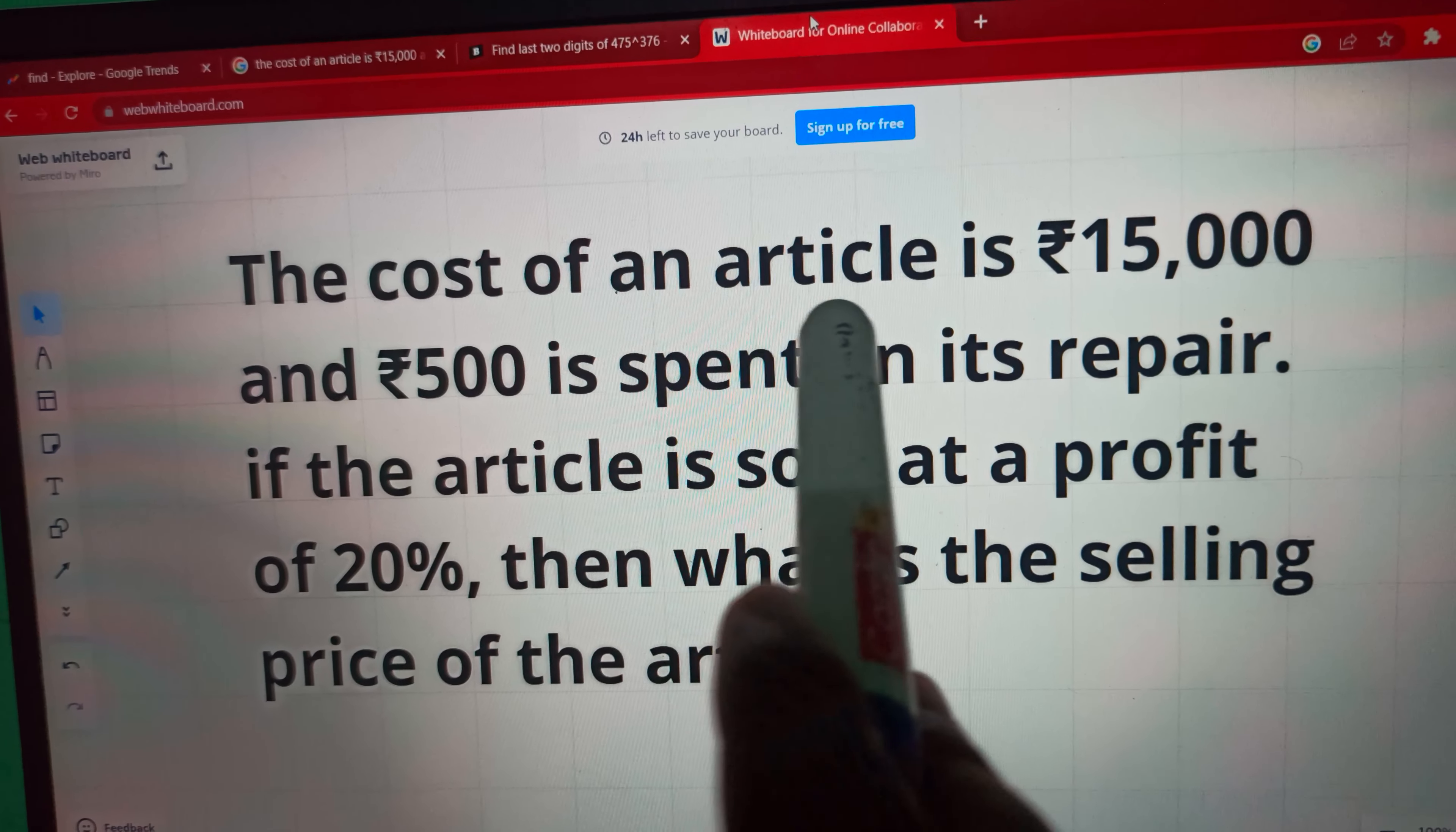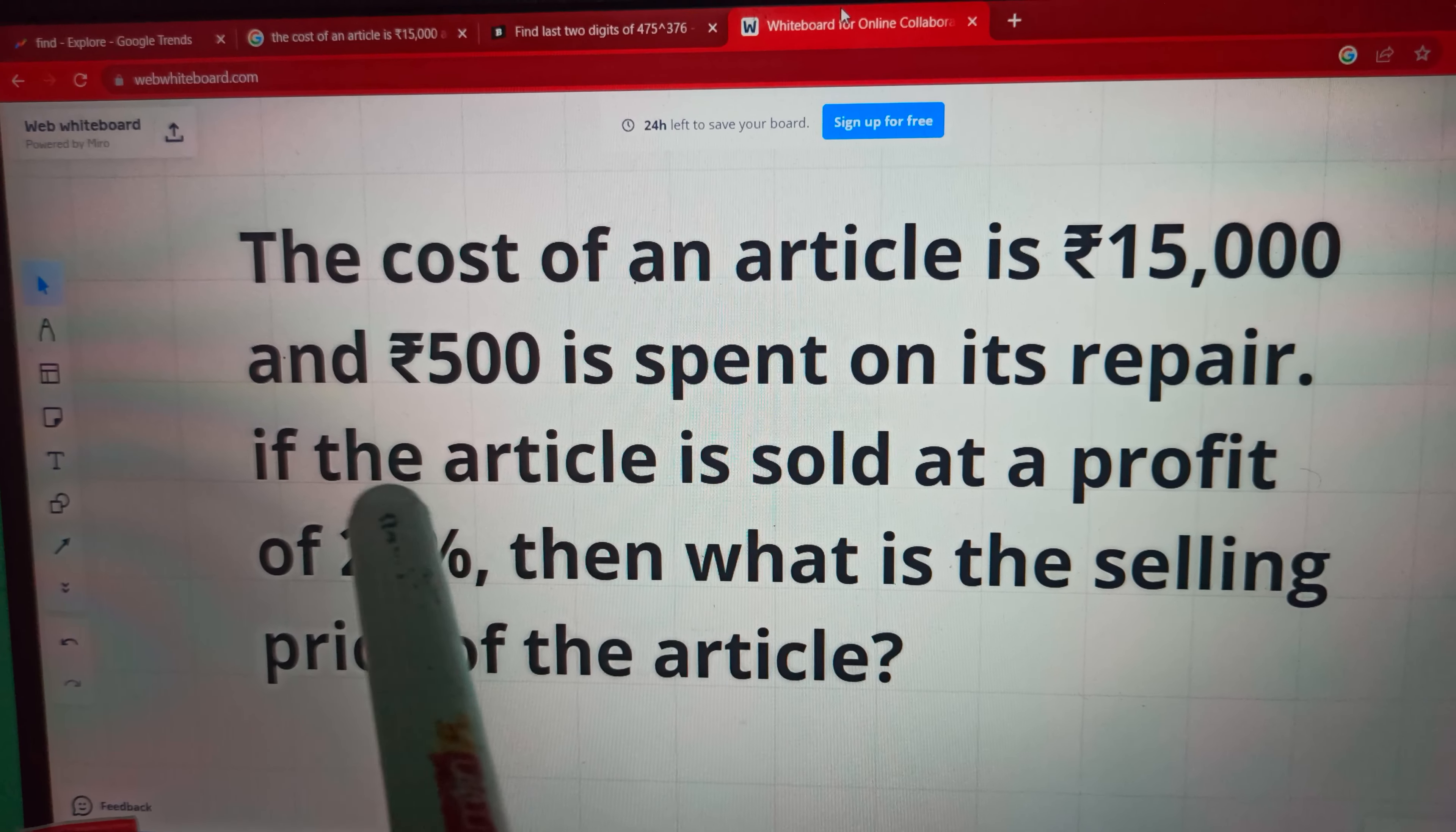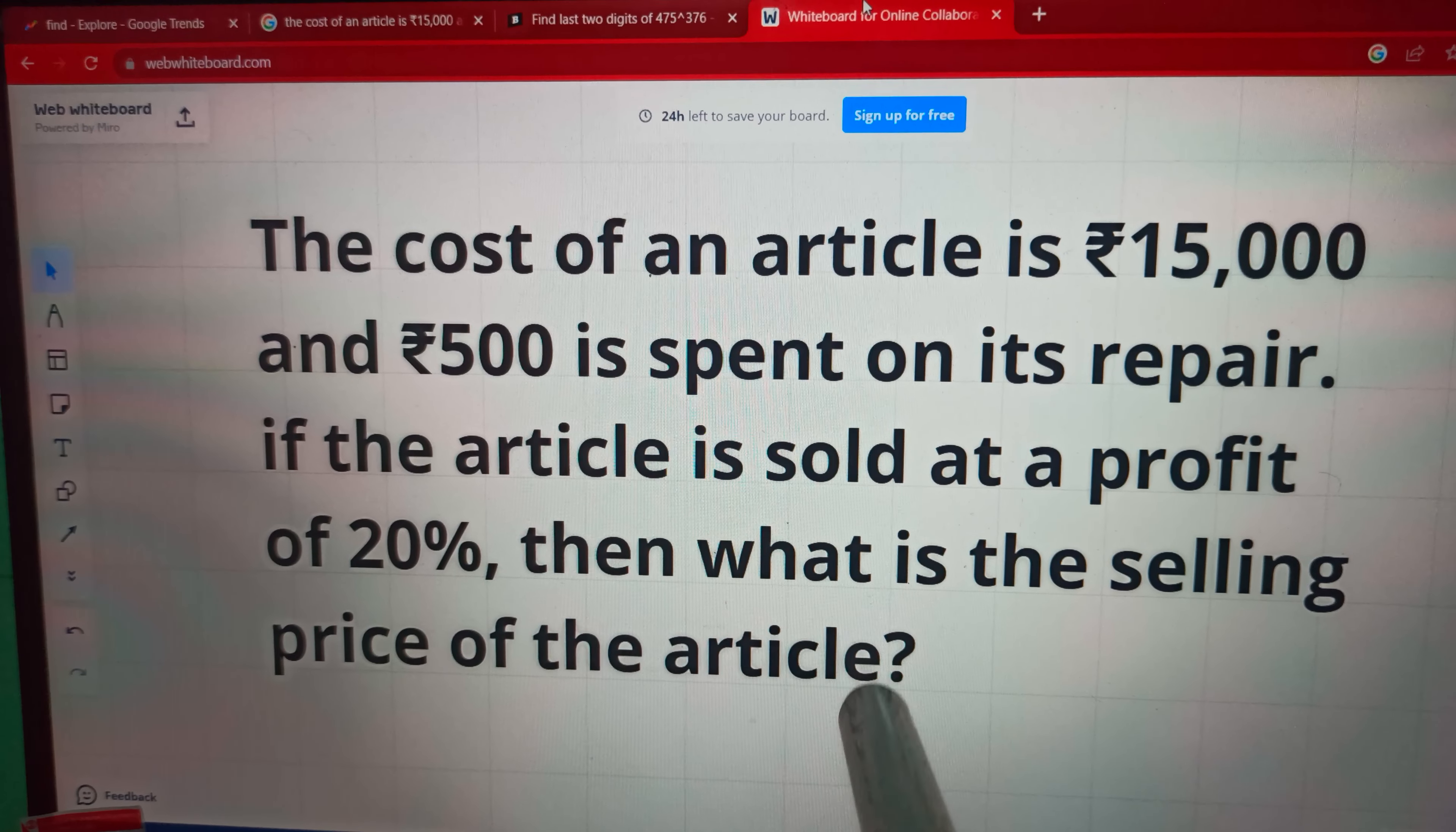So friends, today's question is: the cost of an article is ₹15,000 and ₹500 is spent on its repair. If the article is sold at a profit of 20%, then what is the selling price of the article?